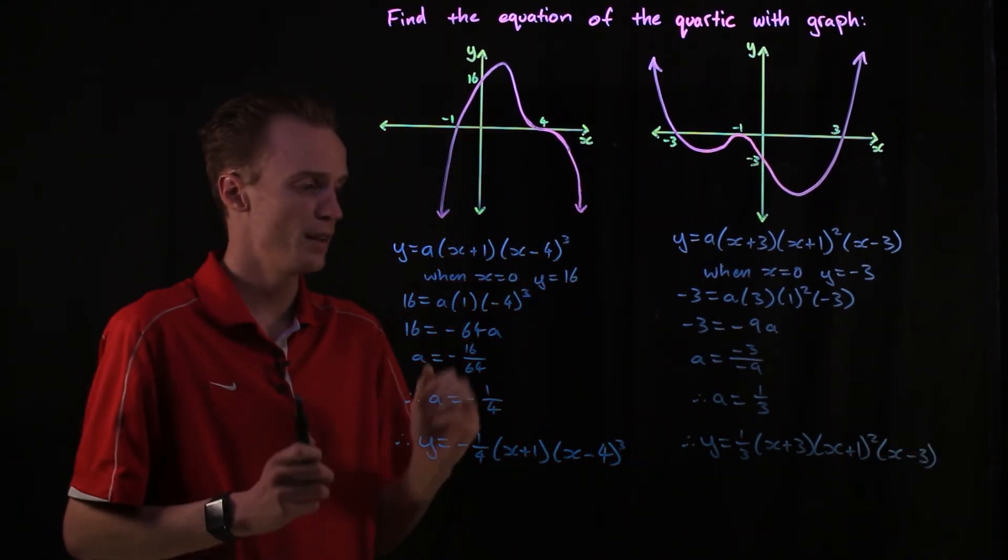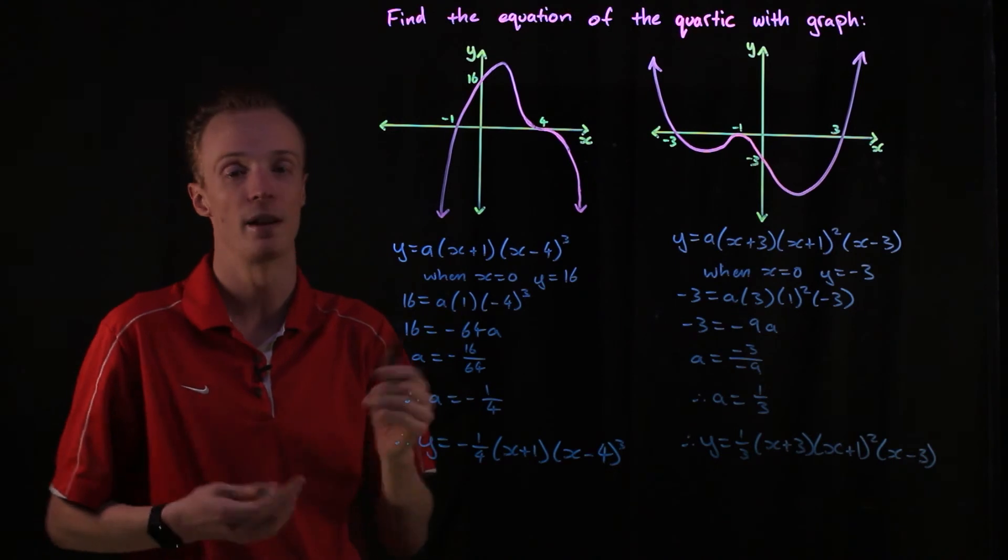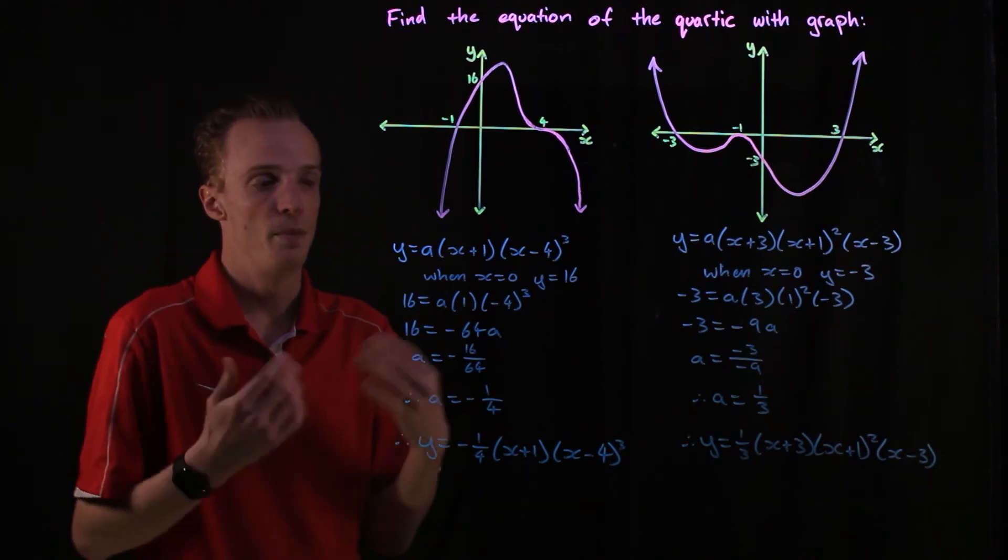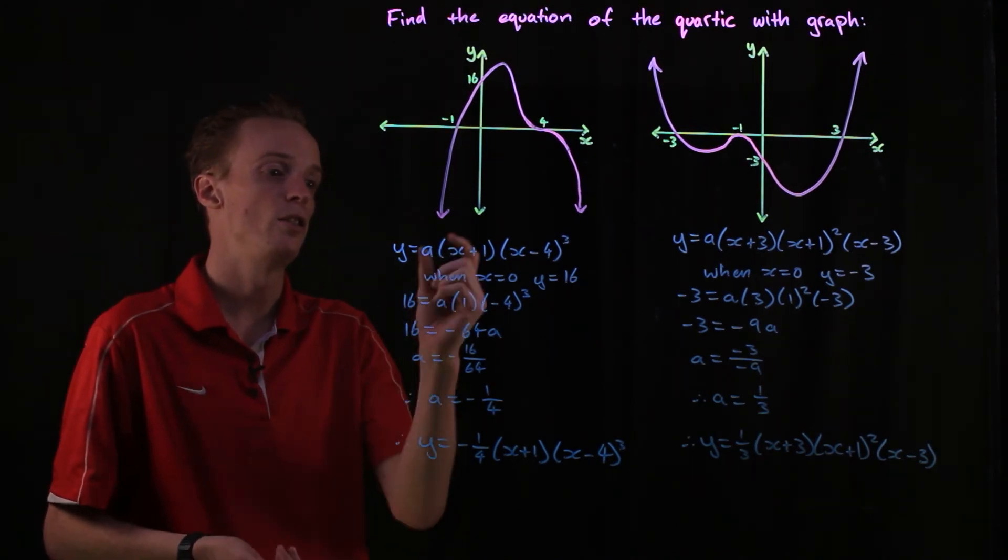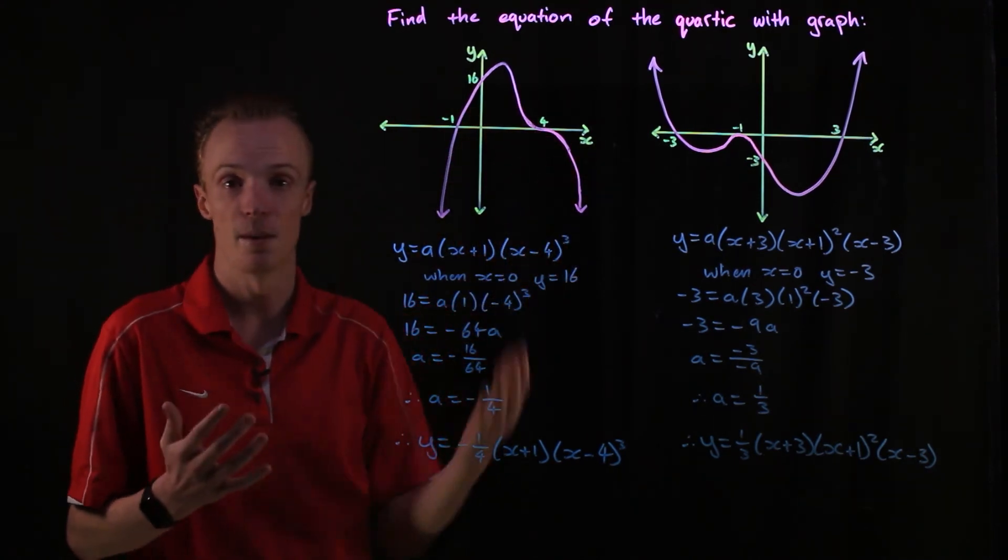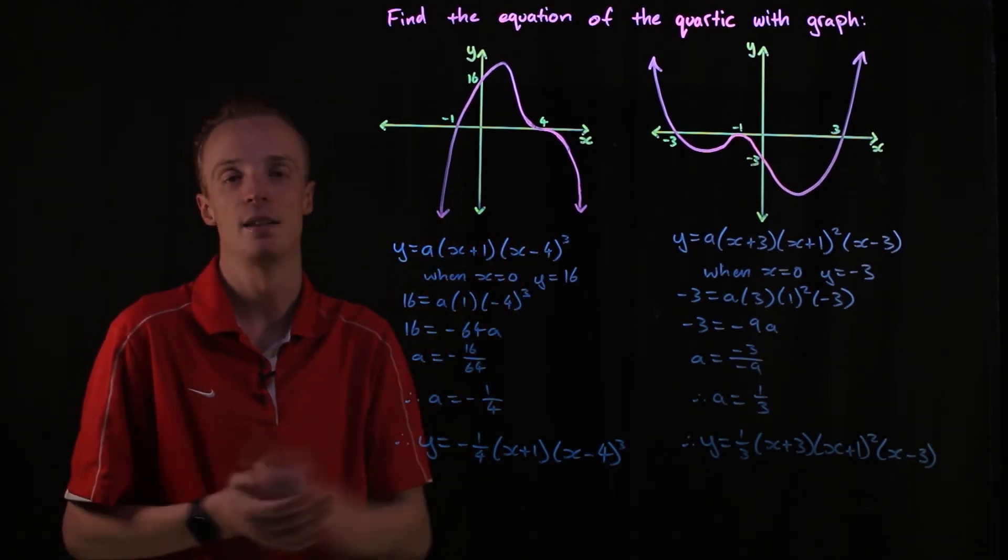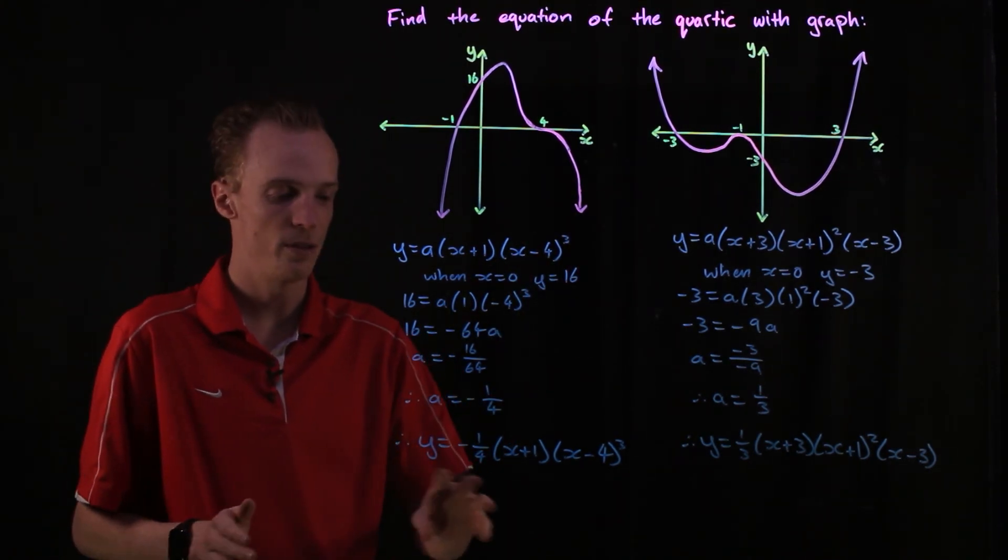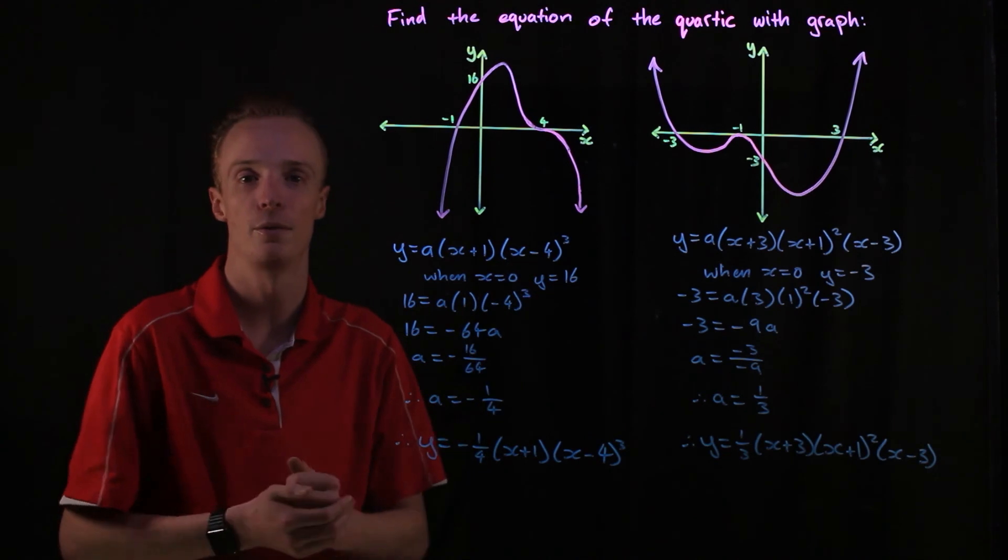Once again, I can look at my a value here. It is positive, my quartic I've got is opening upwards, so that does seem reasonable for this quartic graph. Basically, the steps are: you identify what types of x-intercepts that you have and represent the equation in that factorized form with the type of x-intercepts that you've got. Once you've got that, you need to find the value of a by substituting another point that's not an x-intercept. In these cases, I just substituted the y-intercept because that was the other point that I had. Then once you've got the value of a, you just substitute that back in to find the final quartic that represents the polynomial.